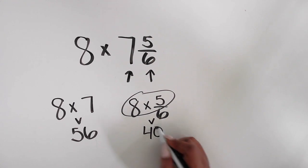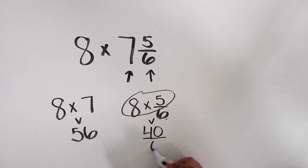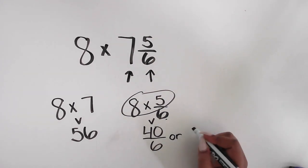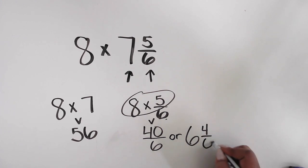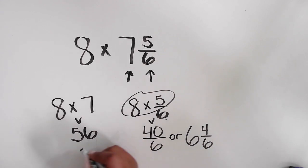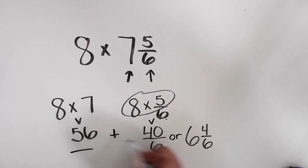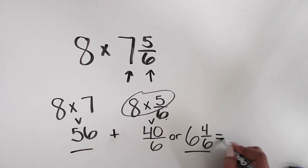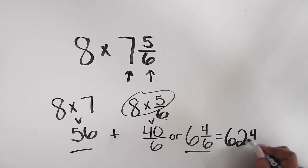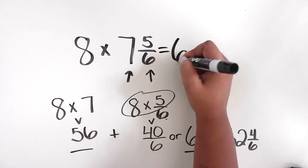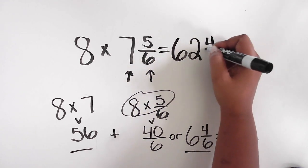That equals 40, so this product is 40 sixths. And now you have another fraction greater than 1, which again your students can convert before adding it together with that whole number. 40 sixths converts to the mixed number 6 and 4 sixths. Finally, add 6 and 4 sixths to the 56. 56 plus 6 and 4 sixths equals 62 and 4 sixths.